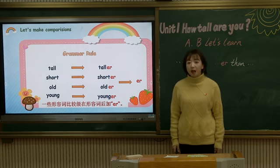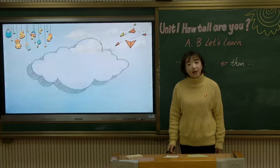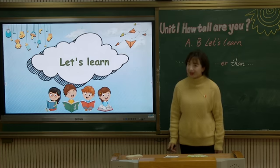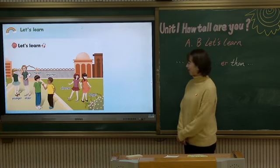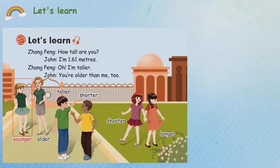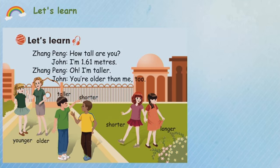Excellent! Now let's watch a cartoon and learn together. Try to find out the comparative degree forms. 观看动画，来找一找这些形容词的比较级吧。Go! How tall are you? I'm 1.61 meters. Oh, I'm taller! You're older than me too. Younger, older, taller, shorter, longer.